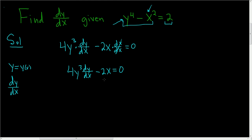So here we have 4y cubed dy/dx minus 2x equals 0. To solve this for dy/dx, maybe we'll add 2x to both sides. So 4y cubed dy/dx is equal to 2x.